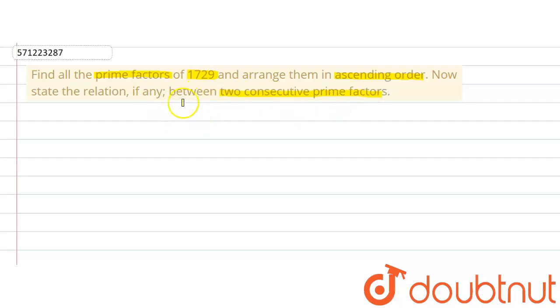So first of all, let us find out the prime factors of 1729. For that, we will write 1729 like this: 1729.